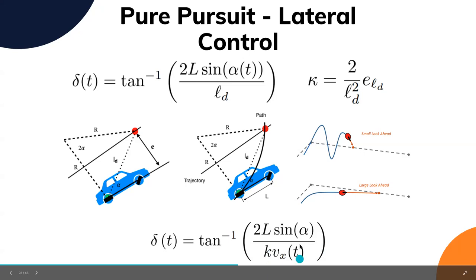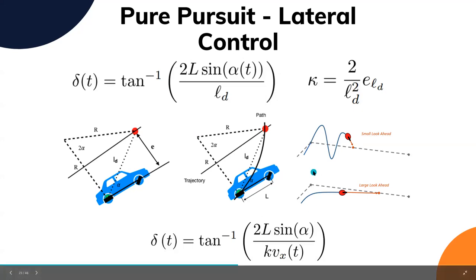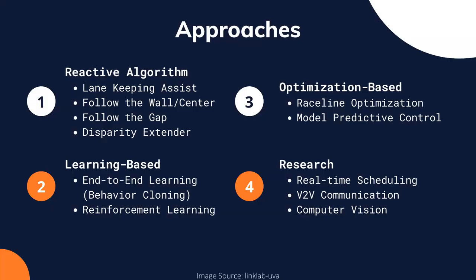That covers the pure pursuit algorithm. The variant the Stanley team used is called a Stanley controller — they added a few terms to make it more stable. Some F1/10 approaches are based on moving around the environment without a map, purely based on reaction.